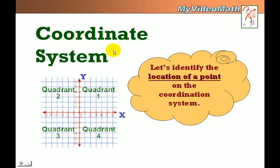Coordinate system. X-axis, y-axis, origin, quadrant 1, quadrant 2, quadrant 3, and quadrant 4. Each point on the coordinate system can be represented by an ordered pair.